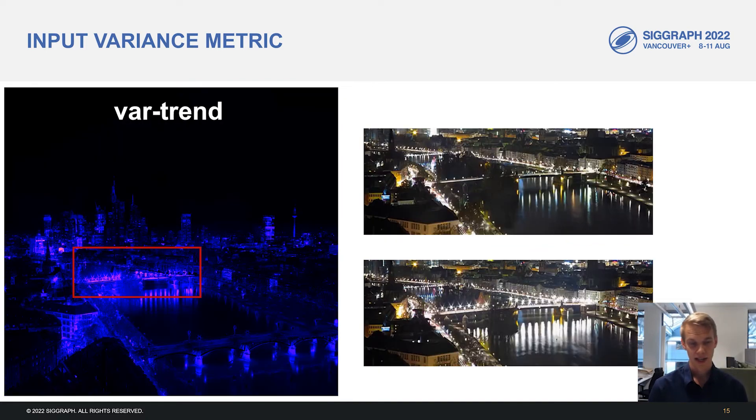The trend input highlights the building that we saw repainted before, but it also highlights the top bridge. This is due to new lights being installed halfway through the timelapse. So when controlling the trend input for a night frame, we can see these stronger lights appear and disappear.